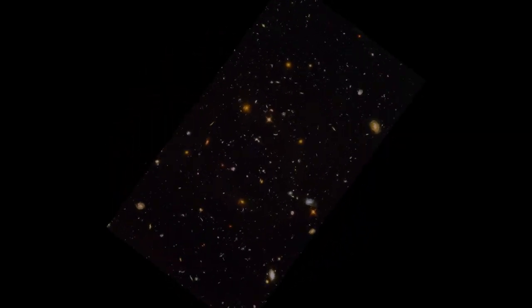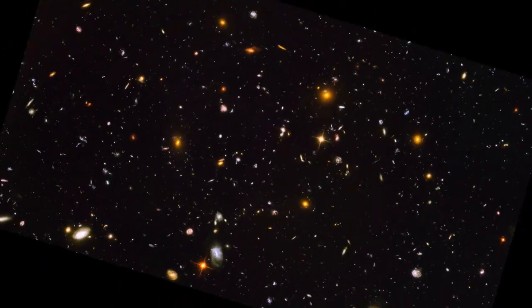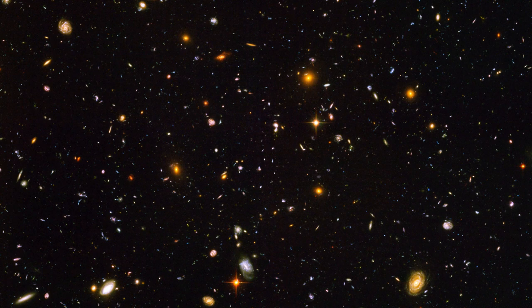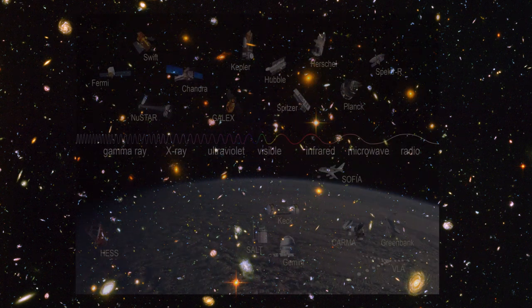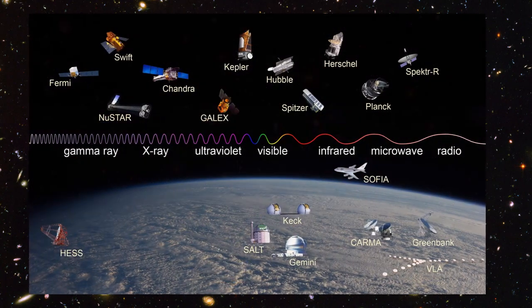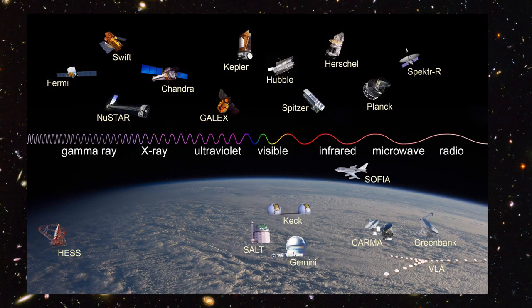Universe is vast. We humans have only been able to observe 5% of it. But even this was not possible from Earth. We had to set up observatories in space. So far, we have launched more than 90 telescopes, out of which 27 are still working and continuously peeking into the space.